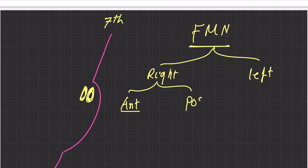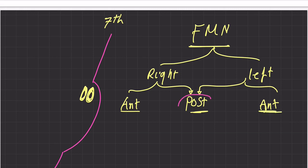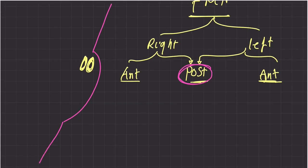On the right side you have anterior and posterior divisions, and on the left side as well. The way this is drawn is very important. The posterior division of the facial motor nucleus sends impulses to the temporal branch of the facial nerve, which is the first of the five facial nerve branches.